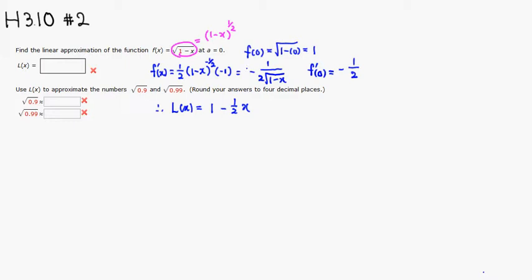So what we want to do is we want to find the approximation. Square root of 0.9 is exactly the same thing as f of 0.1, because if you put the 0.1 here, 1 minus 0.1 is 0.9, so it's the square root of 0.9, which means that this can be approximated by the linearization at the same point. So this is going to be 1 minus 1 half times 0.1.